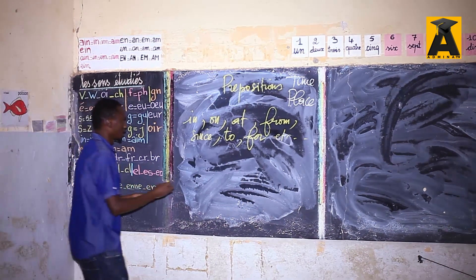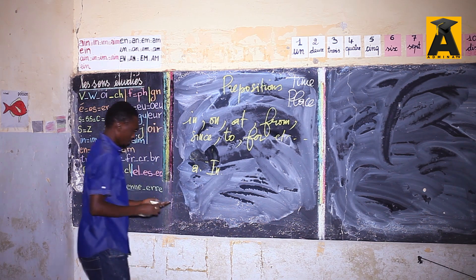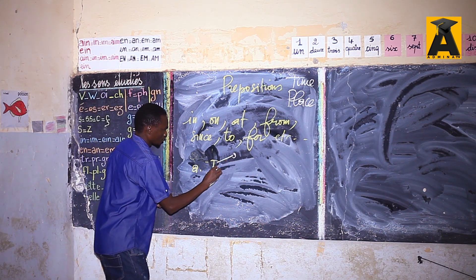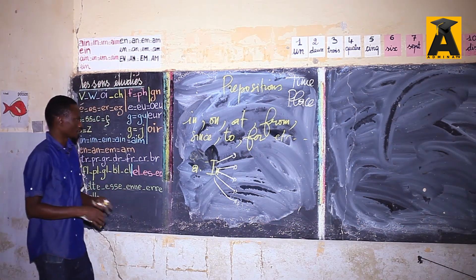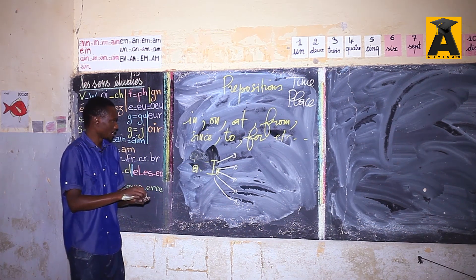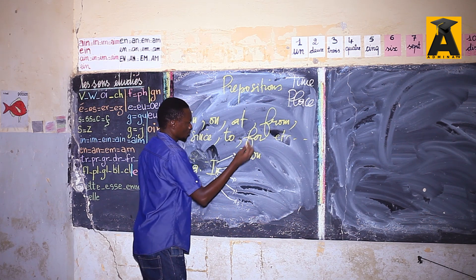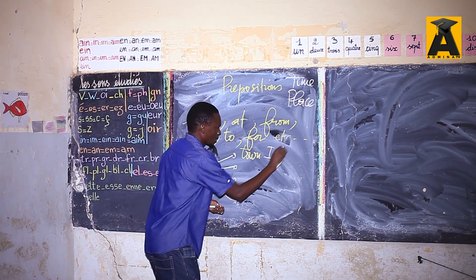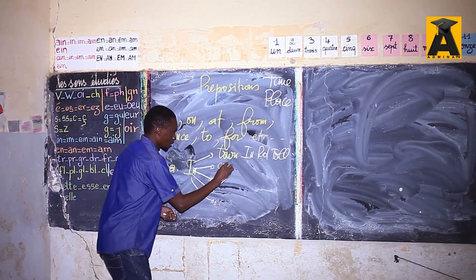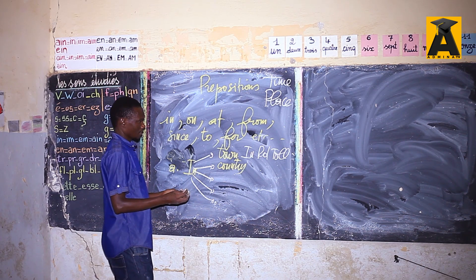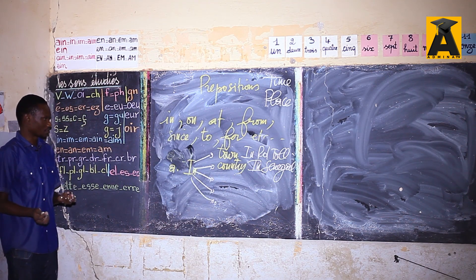First, we're going to tackle 'in.' The preposition 'in' is quite different from 'at' and from 'to.' When you use towns or countries, for example, you say 'in' with cities. You say 'I live in Dakar' or 'I live in Senegal.' So 'in' goes with cities and countries.